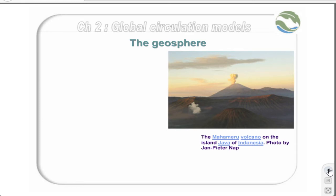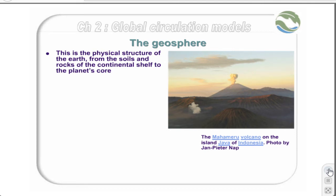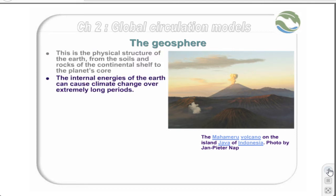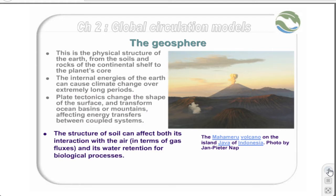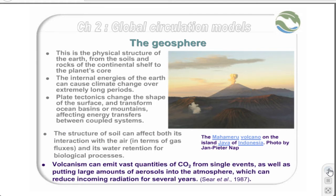The geosphere is the physical structure of the Earth — the soil, rocks, and sediments of our continental masses, the outer crust, and ultimately the Earth's core. Variations over tens to hundreds of millions of years are due to changes in internal energies of the Earth. Plate tectonics change the shape of the surface and transform ocean basins or mountains, affecting energy transfers between coupled systems. Physical and chemical processes affect soil structure, moisture availability, and water run-off, as well as the flux of greenhouse gases and aerosols into the atmosphere. Volcanism can emit vast quantities of carbon dioxide from single events, as well as putting large amounts of aerosols into the atmosphere, which have been shown to reduce incoming radiation for several years.